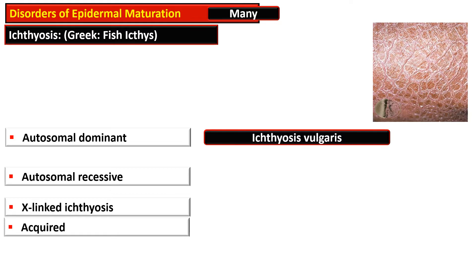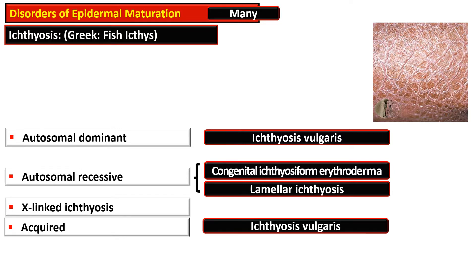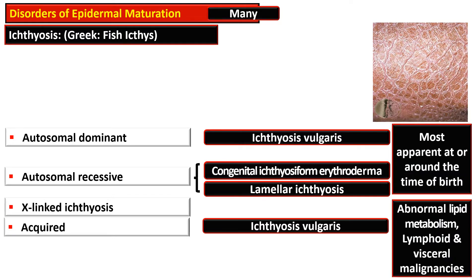The autosomal dominant form is the commonest, hence it is termed ichthyosis vulgaris. The autosomal recessive forms are congenital ichthyosiform erythroderma and lamellar ichthyosis. The acquired ichthyosis also results in ichthyosis vulgaris. The autosomal inherited forms are most apparent at or around the time of birth, while the acquired variety is associated with abnormal lipid metabolism, lymphoid and visceral malignancies.